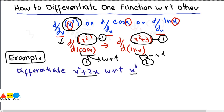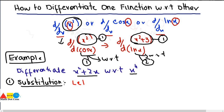Step number one is substitution. You have to substitute variables instead of these functions. Let y = x² + 2x and u = x⁴. This is step number one.